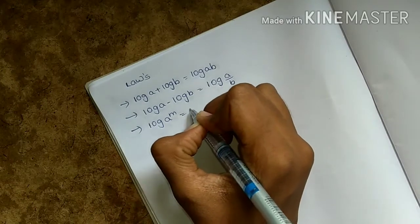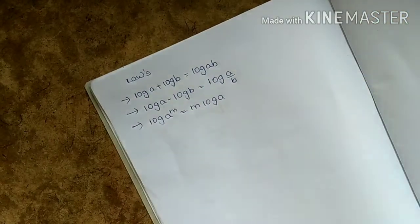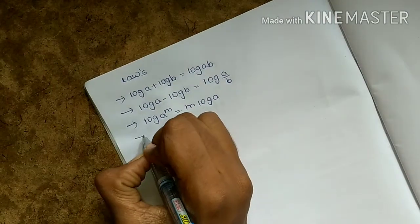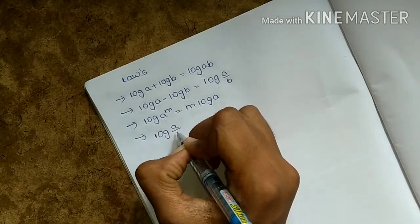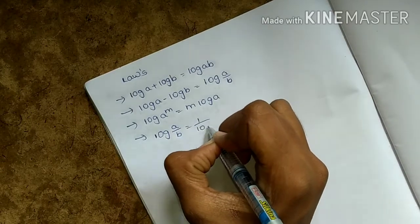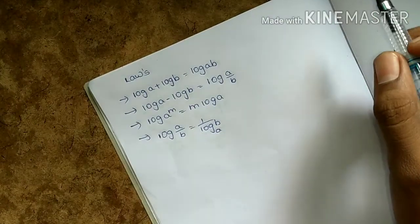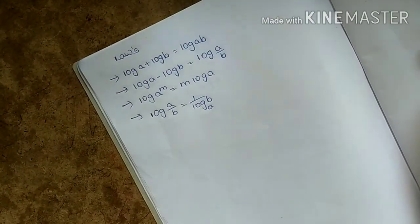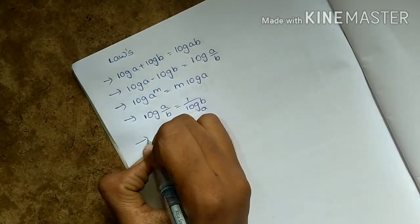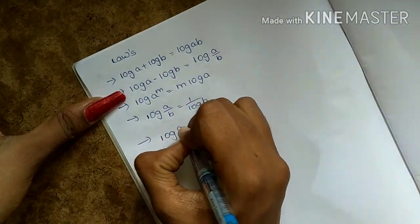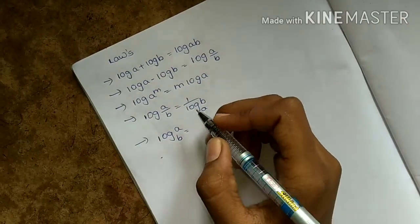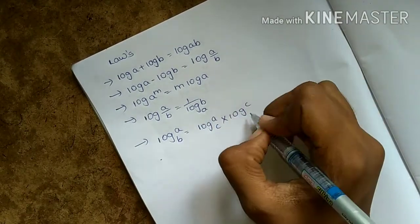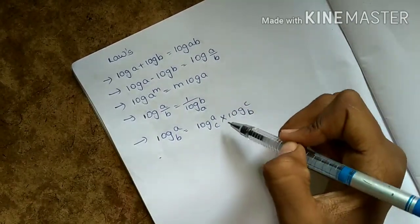Log a power m is equals to m log a. A power log b is equals to log b by log a. So log a by b is equals to 1 by log b to the base a. Next one: log a to the base b is equals to log a to the base c into log c to the base b. So we can cancel it.